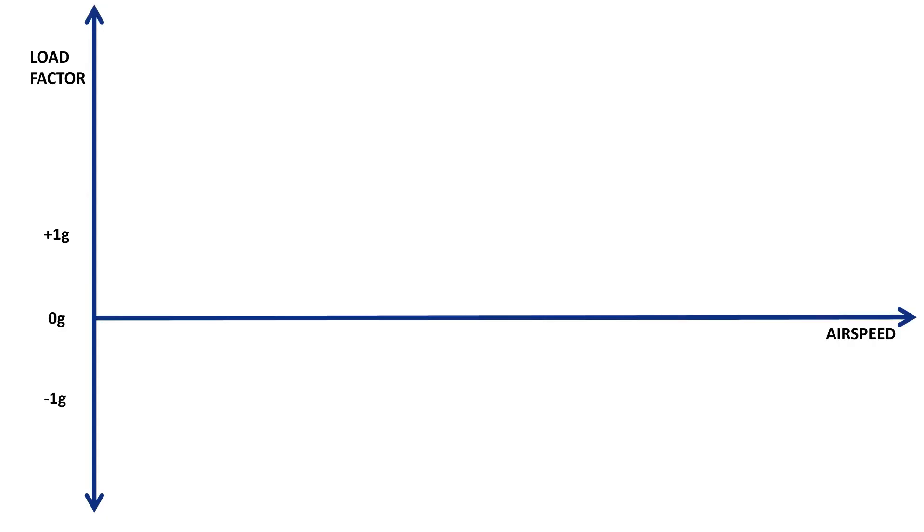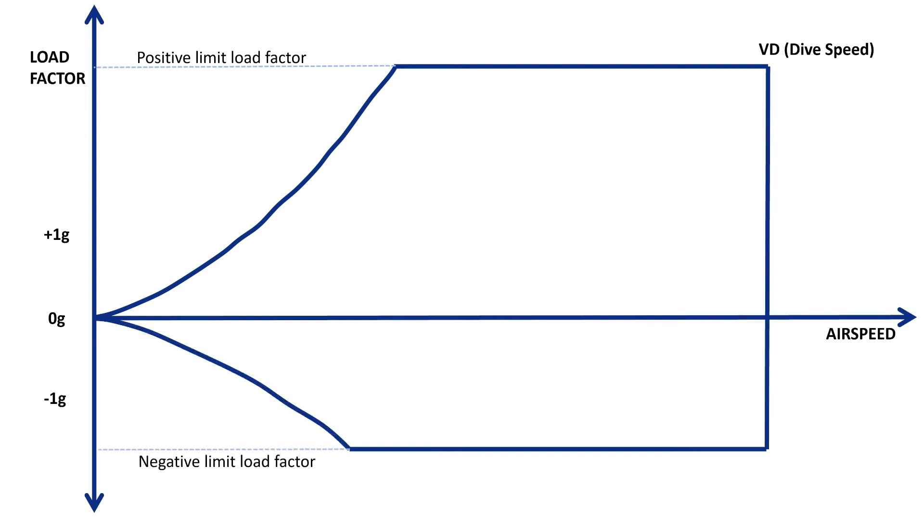In the last video I focused on the manoeuvring envelope, identifying some important points of interest such as the 1G stalling speed VS and the design manoeuvring speed VA.